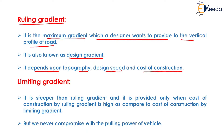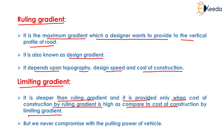The next gradient is limiting gradient. It is steeper than ruling gradient and is provided only when the cost of construction by ruling gradient is high compared to the cost of construction by limiting gradient. We never compromise with the pulling power of the vehicle — the gradient will always be less than the pulling power of the vehicle, otherwise the vehicle will not travel along that gradient.